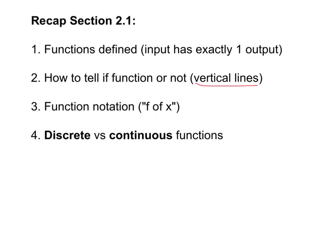Next, we looked at function notation, namely f of x, which is written like this. It does not mean f times x, and how to tell if something is an input or an output there. And finally, we looked at the definitions of discrete and continuous functions, which are two types.